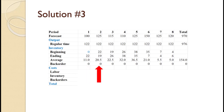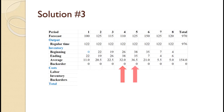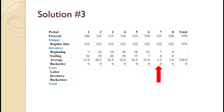For period 2, demand is 125 and production is only 122 so inventory drops from 22 to 19 for an average of 20.5. For period 3, demand is 115 and production is 122 so inventory goes up from 19 to 26 for an average of 22.5. For period 4, demand is 110 and production is 122 so inventory goes up from 26 to 38 for an average of 32. For period 5, demand is 125 and production is only 122 so inventory drops from 38 to 35 for an average of 26.5. For period 6, demand is 150 and production is only 122 so inventory drops from 35 to 7 for an average of 21. For period 7, demand is 125 and production is only 122 so inventory drops from 7 to 4 for an average of 5.5.